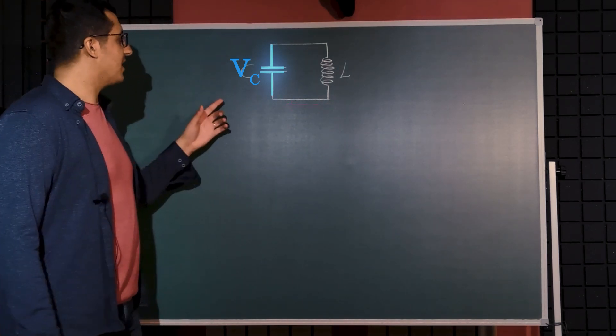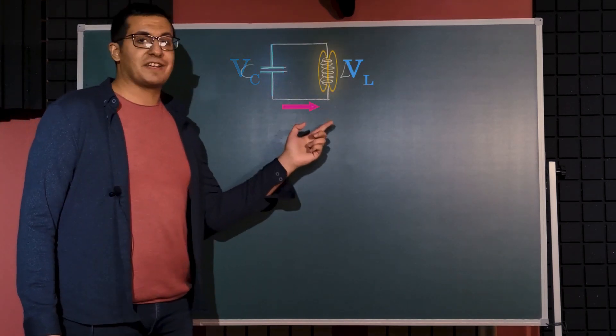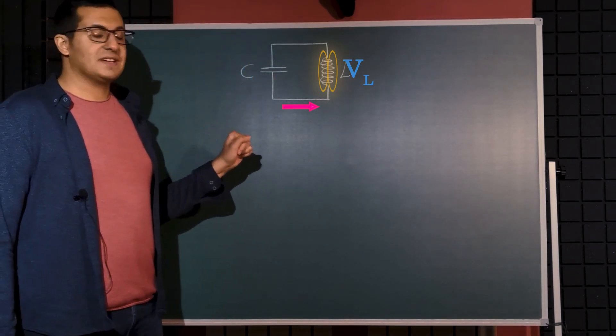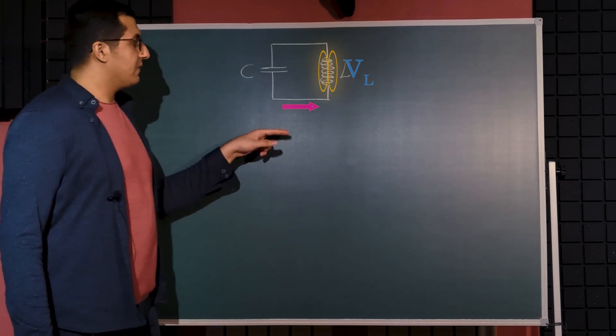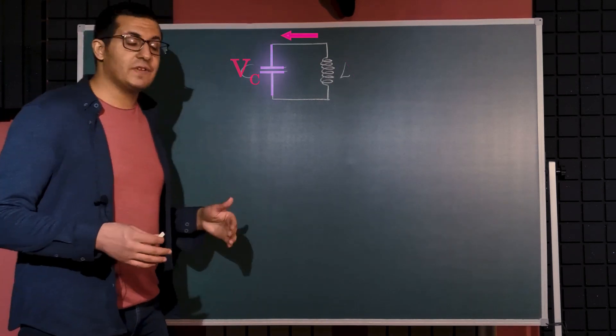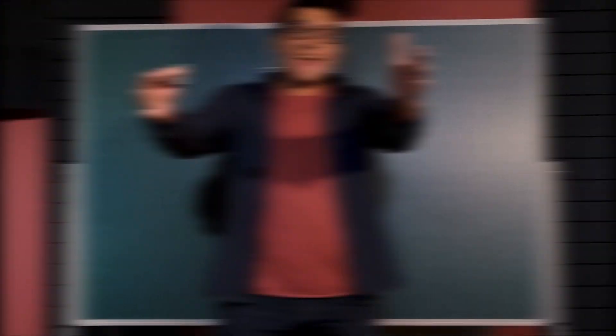When it is fully charged in the reverse order it will dump the same current but in the opposite direction towards the inductor again. This cycle will go on and on till infinity and we get free energy.